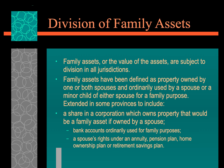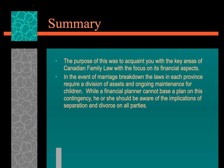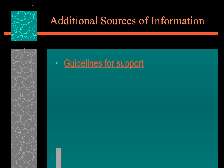Family assets or their value are subject to division in all jurisdictions. Family assets are defined as property owned by one or both spouses and ordinarily used by a spouse or minor child. Extended in some provinces, this may include bank accounts, pension plans, home ownership, or retirement savings plans. To summarize, the purpose of this was to get you familiar with what happens when a marriage breaks down — you definitely need to have a good financial plan, and you can also seek additional information on the topic.